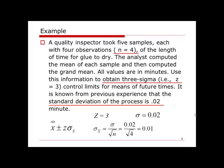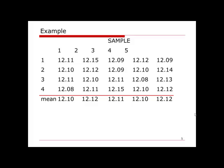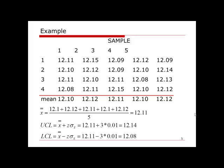With all this information, we look at the sample values to calculate the mean for each sample, and eventually calculate the average of the sample means — the grand mean — which gives us a value of 12.11. Then we substitute all values into the formula to get the upper control limit and the lower control limit of this mean chart.